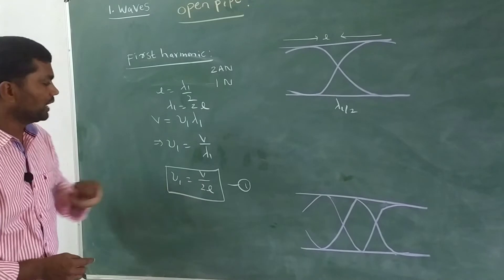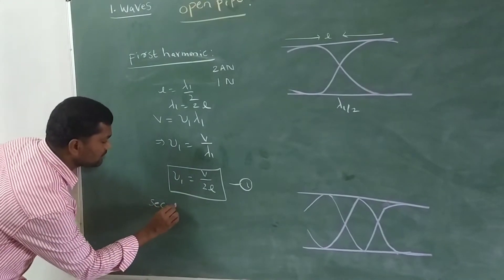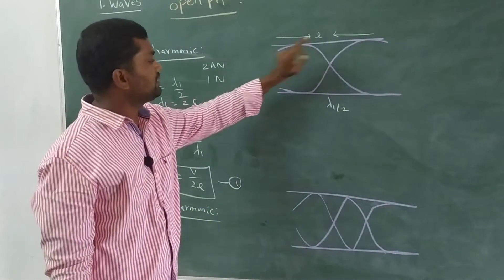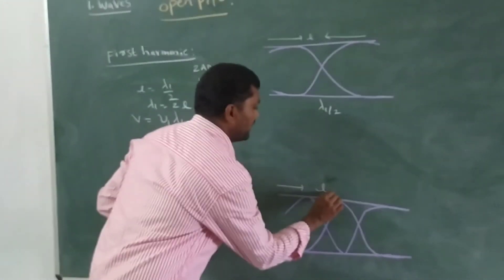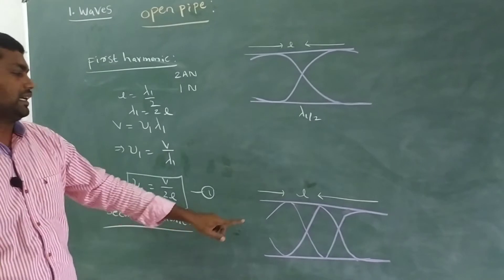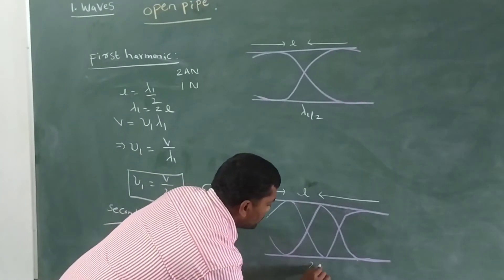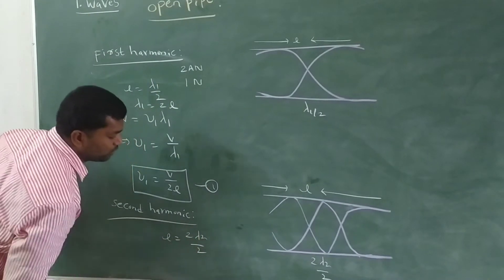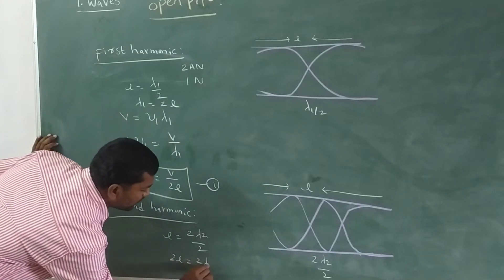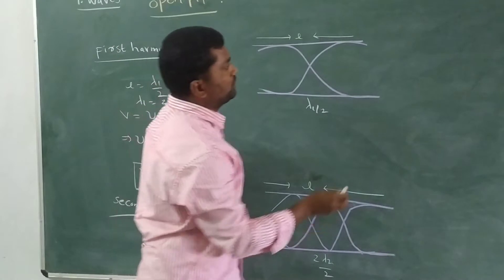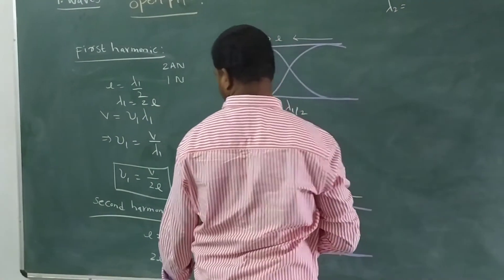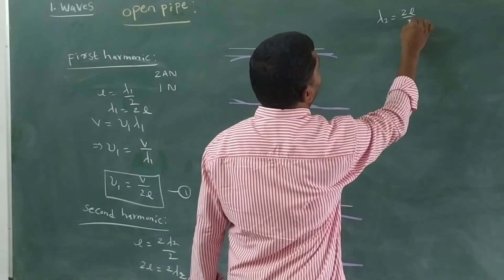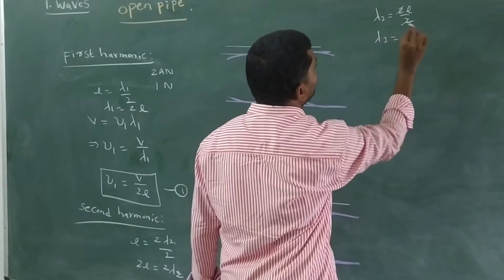Next, for the 2nd harmonic: in the 1st harmonic, L is equal to λ₁ by 2. For the 2nd harmonic, L is equal to 2λ₂ by 2, which means 2L is equal to 2λ₂, so λ₂ is equal to 2L by 2. Cancelling the 2s, λ₂ is equal to L.